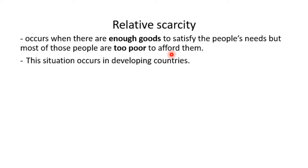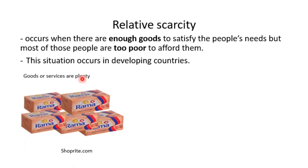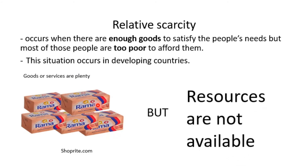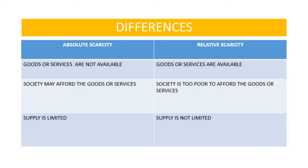We find that there are goods in the shops, but people don't have the money to buy them. Goods and services are plentiful, as we can see here, but resources are not available — the society does not have money.